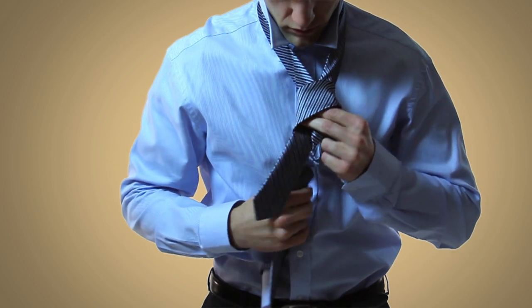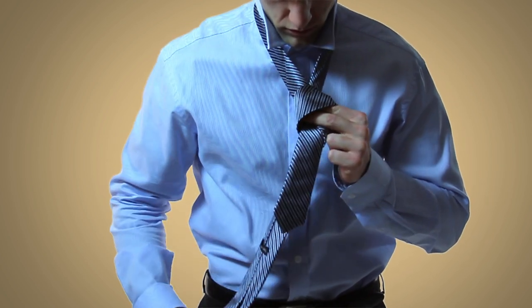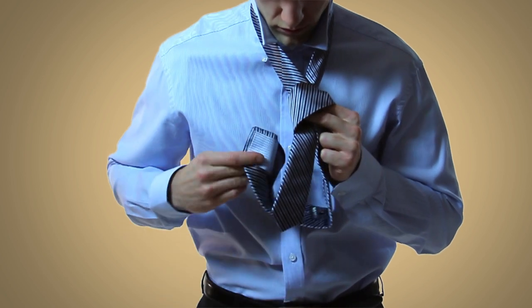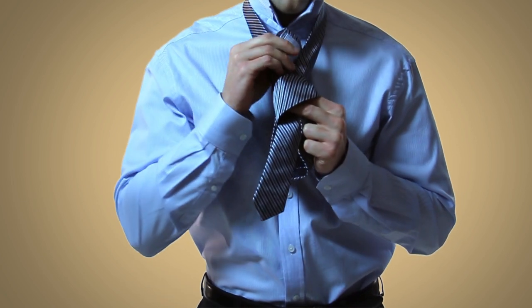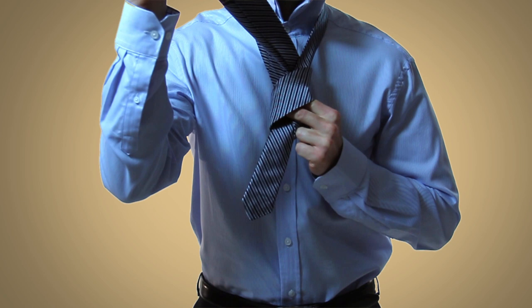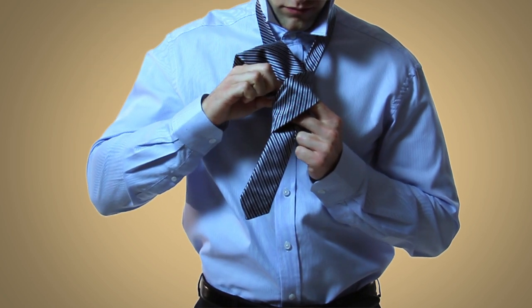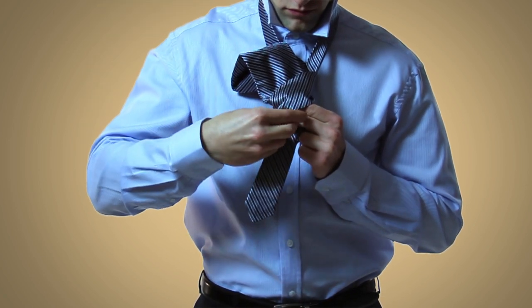After that you'll bring the wide end up through the loop made by your neck. Pull the tie up and then bring the wide end through the loop that you made with your fingers.